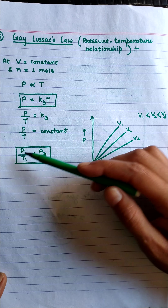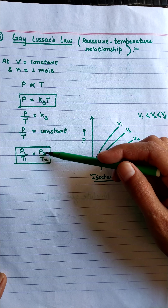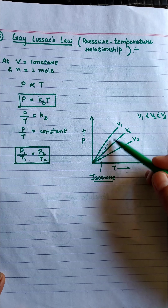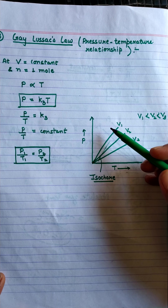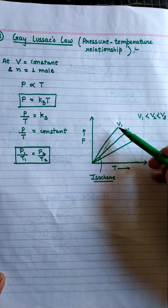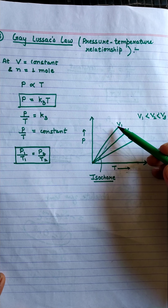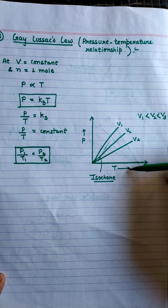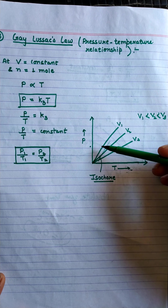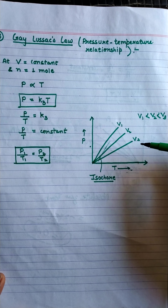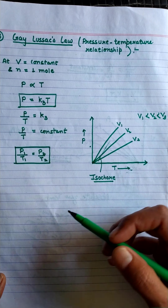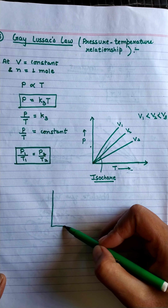Therefore P1/T1 = P2/T2. If we draw a graph between pressure and temperature, we will get a straight line graph at different constant volumes. On increasing temperature, pressure will also increase, so at different values of volume kept constant, measuring pressure and temperature gives a straight line.